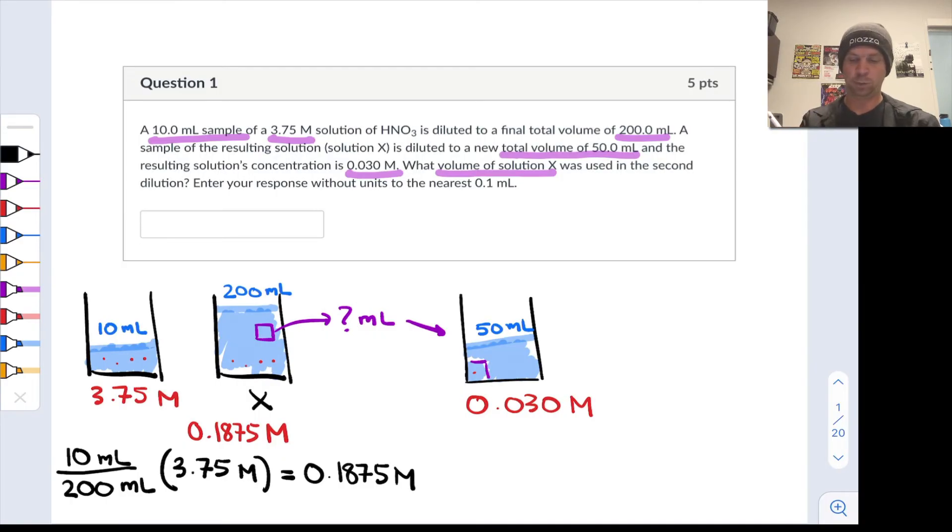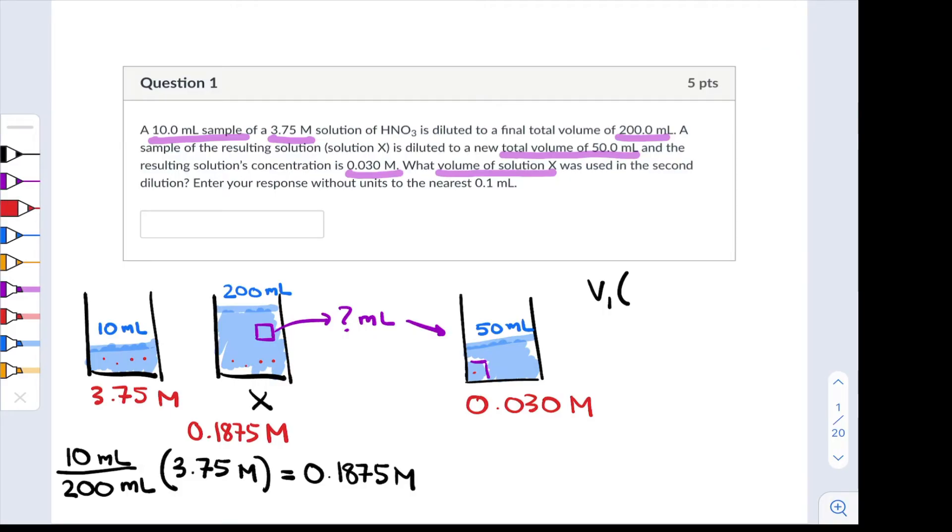So I'm going to call that V1 and since the moles of solute did not change inside that purple box, V1 times its molarity 0.1875 molar has to be equal to the final volume 50 mL times the final molarity 0.030 molar.